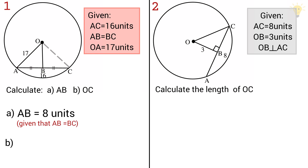Next, calculate the length of OC. OC is the radius — the line from the center of the circle to any point on the circumference. O is at the center and C is on the circumference, so OC is the radius. Therefore, since OA is a radius and equals 17 units, OC is also 17 units.